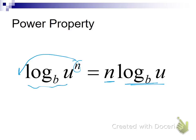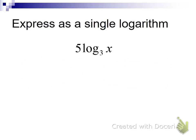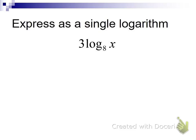The opposite is true as well — we can go the other way. If I have a coefficient in a logarithm, I can write that as an exponent on the argument inside the logarithm. That's the way we're going to go most of the time. For example, I've got 5 times this logarithm, so I want to bring the 5 in as an exponent of the argument — x to the 5th. Same thing here: the coefficient becomes an exponent, giving log base 8 of x³.